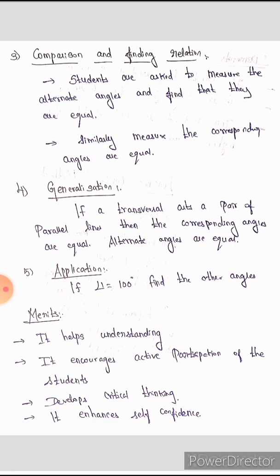Measure the alternate angles and find that they are equal. The three parallel lines are set and the corresponding angle is equal. You will know the two parallel lines are done, and the application is total. The solution will be applied.